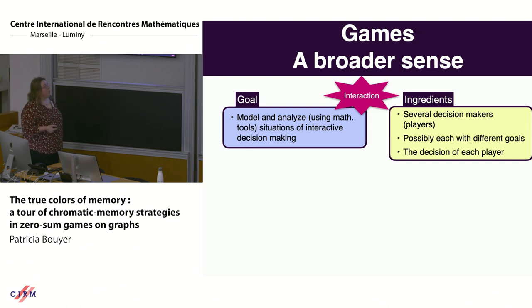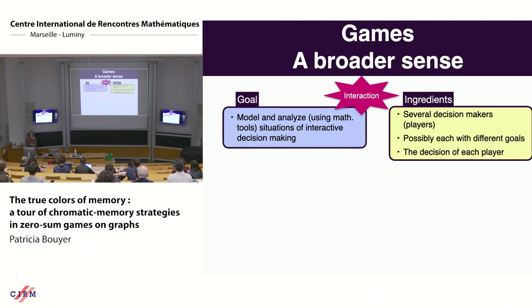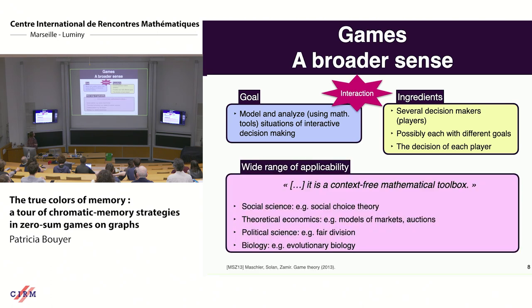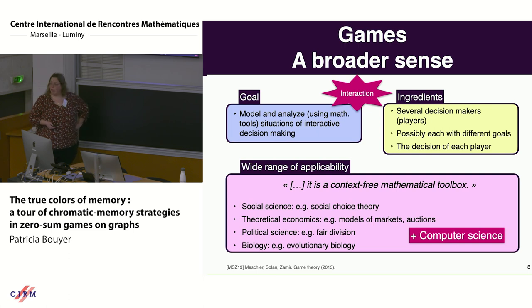What is a game? A game models situations where you have interaction between agents or components of a system. The ingredients of a game are a set of decision makers called players, who possibly have different goals. For instance, a train wants to arrive safely, but the driver may want something else. Games form a context-free mathematical toolbox applicable to many topics in science, social science, economics, and computer science.